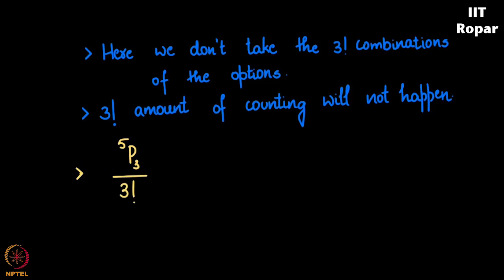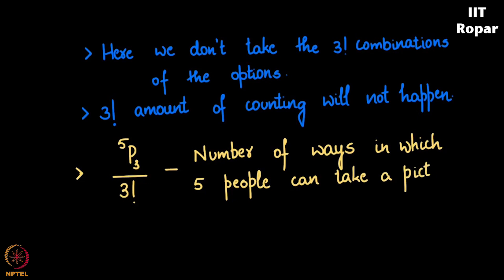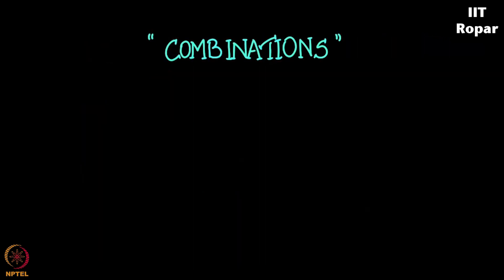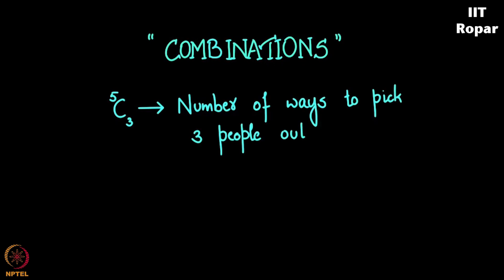So 5P3 was the total number of ways, and I am now going to ensure that I divide this by three factorial, which gives me the answer for my question: in how many ways can five people take a picture with three people coming forward, not worrying much about the order of these three people once picked?